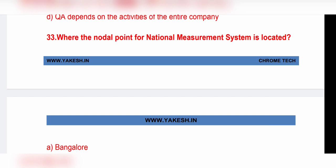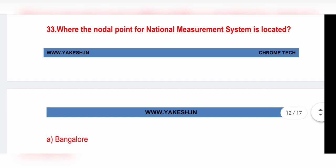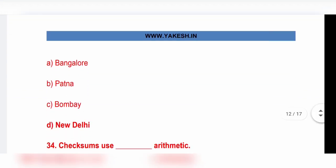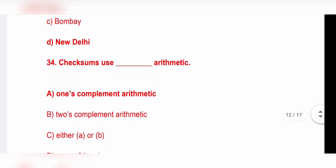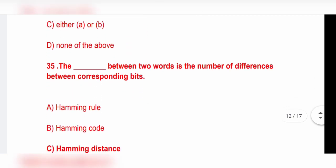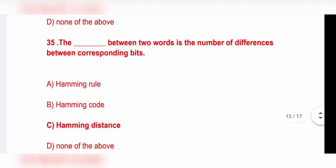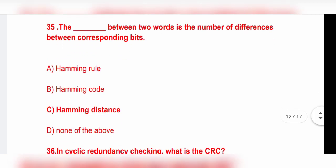Where is the nodal point for the national measurement system located? Option D, New Delhi, is the correct answer. Checksum uses one's complement arithmetic. Option A, one's complement arithmetic. Hamming distance between two words is number of differences between corresponding bits. Option C, Hamming distance, is the correct answer.